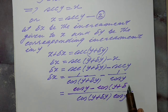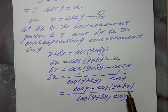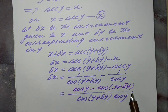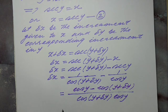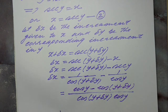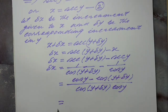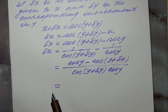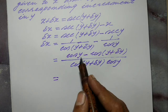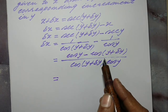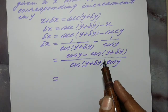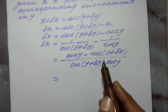In the numerator we have cos y minus cos(y + delta y). Now we may apply the formula cos C minus cos D in the numerator.